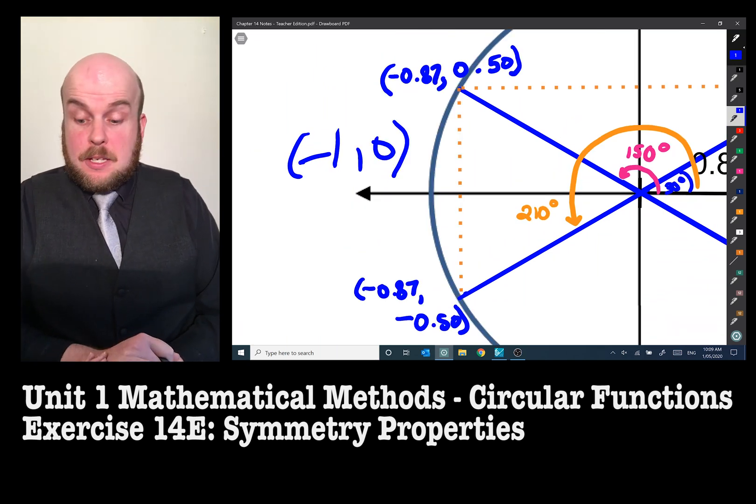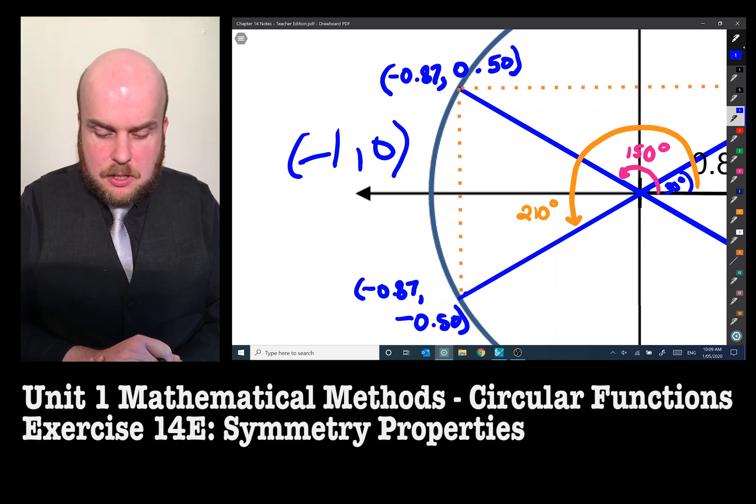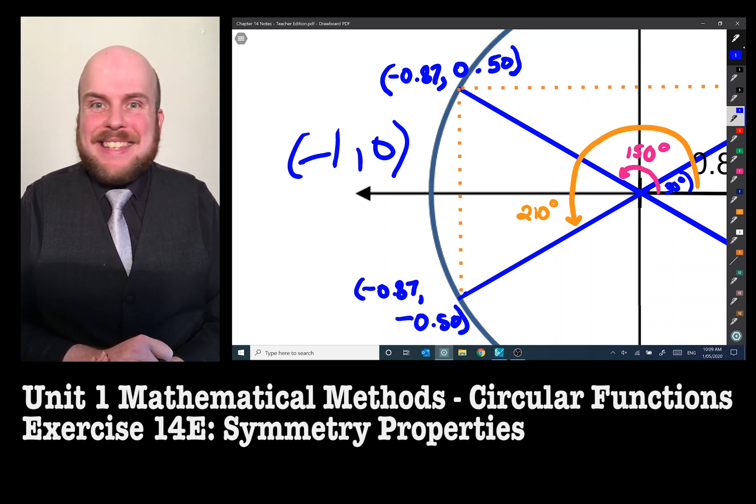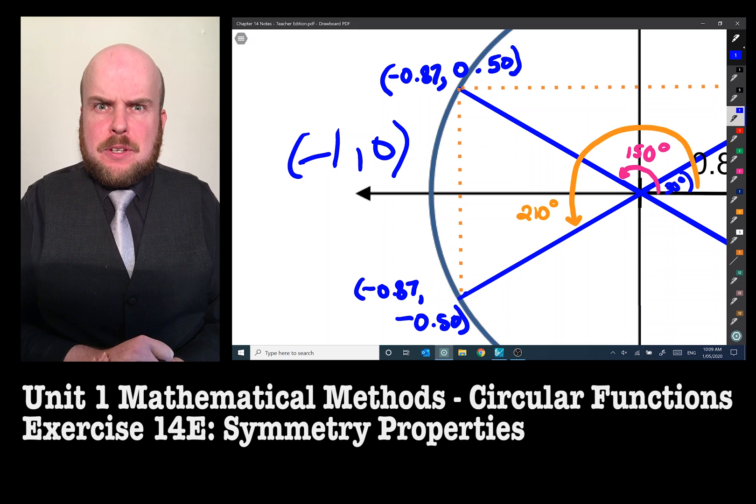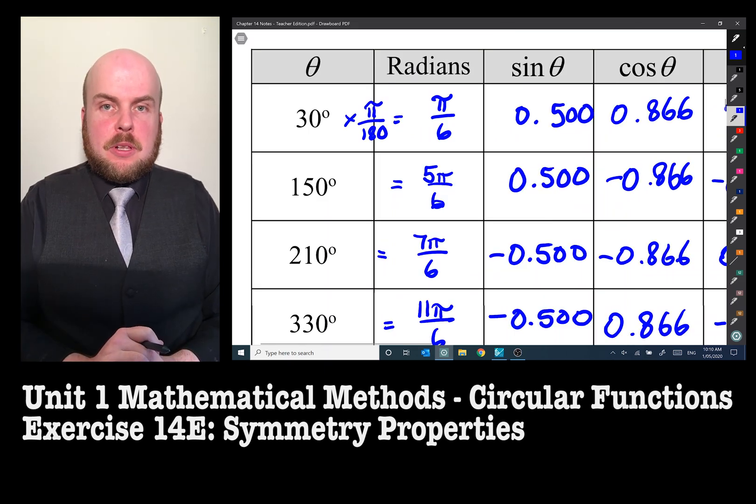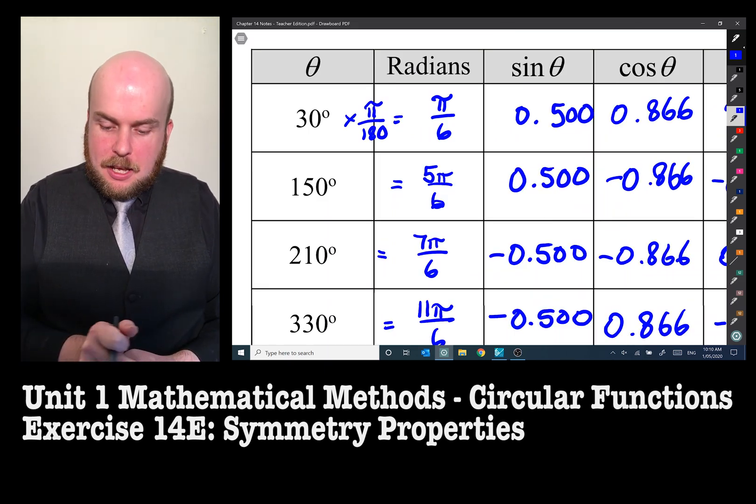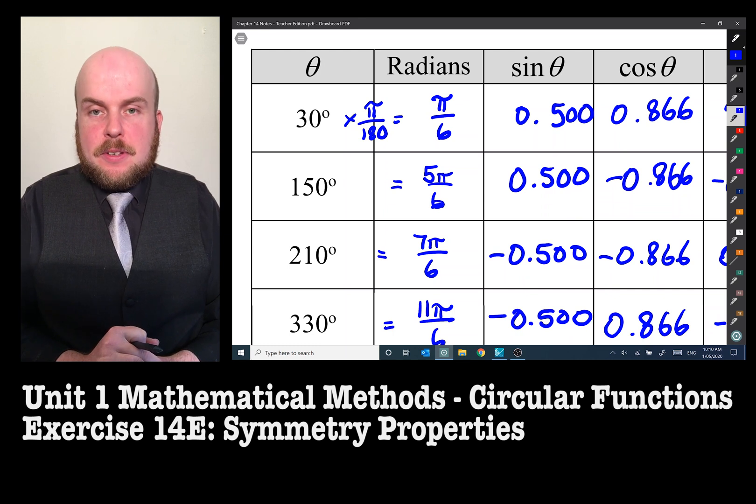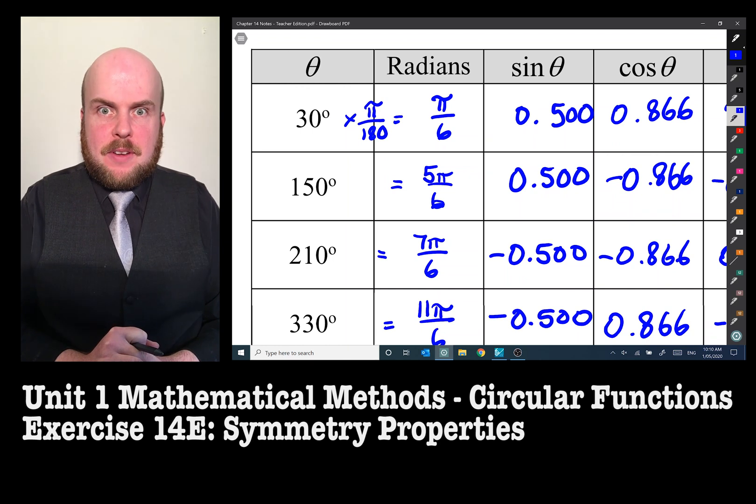So now we just need to prove to see, did cos of 210 degrees equal to -0.87 and did sine of 210 degrees equal to -0.50? Let's refer to our table and to quote Brooklyn 99, bing pot! Here we go: -0.500 is our sine value and -0.866 is our cos value.